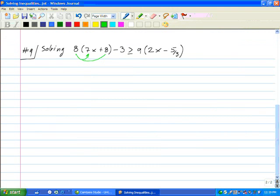By distributing, meaning multiplying. 8 times 7x is 56x. 8 times 8 is 64. I am not going to multiply the 3. I am just going to bring it down. The 3 is not inside the parentheses. So it does not get multiplied.